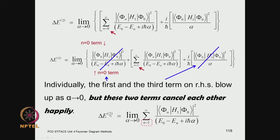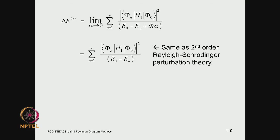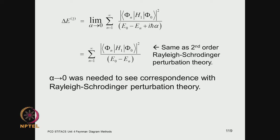This is now your result: the second order correction is an infinite power series, and taking the limit alpha going to 0, this is just the result you get from Rayleigh-Schrödinger perturbation theory, which is exactly what one would want. One might wonder that if you are getting the same thing as Rayleigh-Schrödinger perturbation theory, why did we go about it in this roundabout manner — inserting an e to the alpha t term and then getting rid of it?